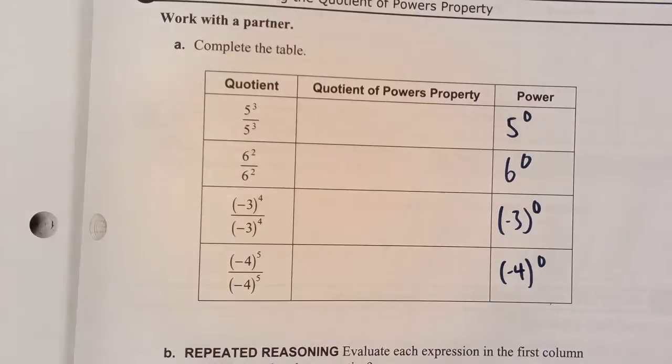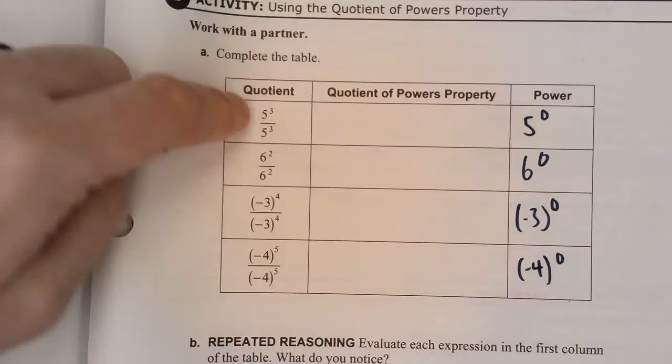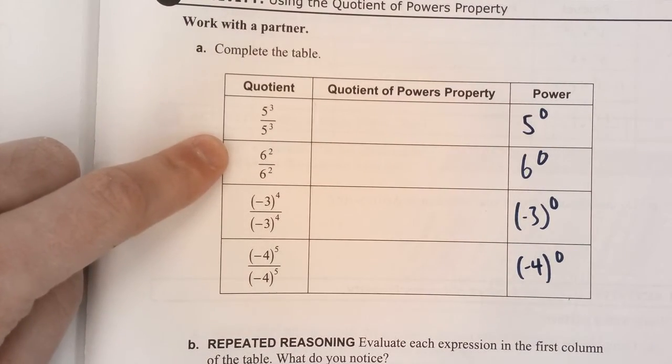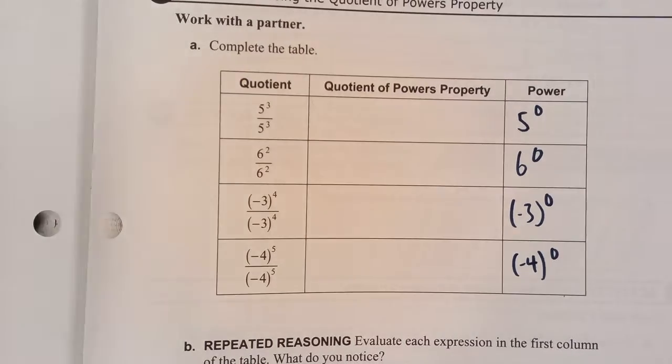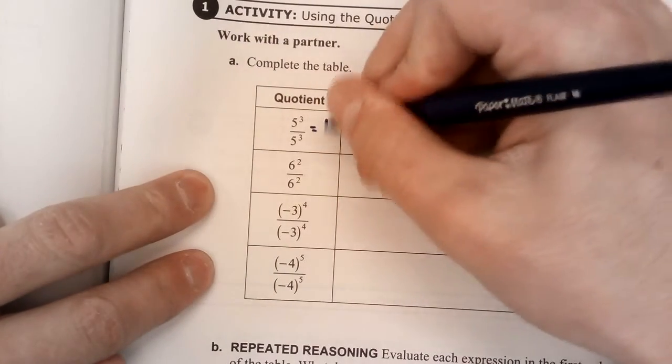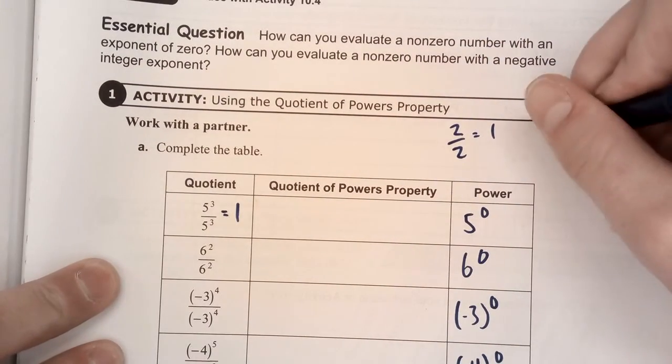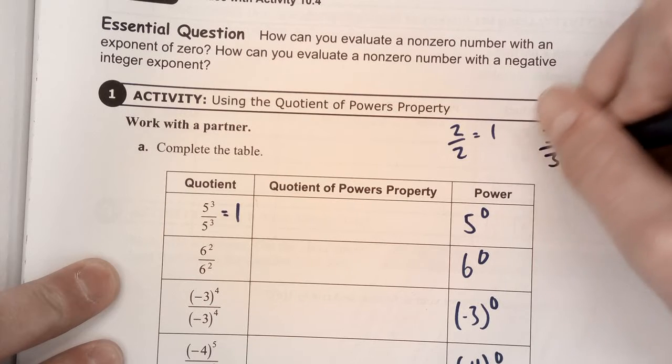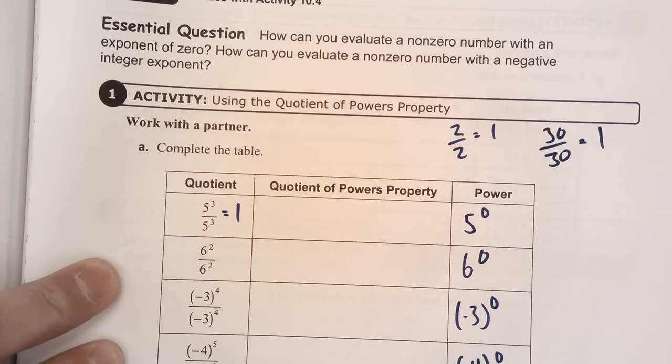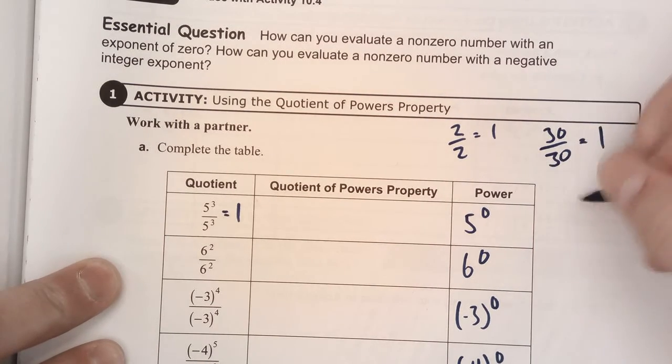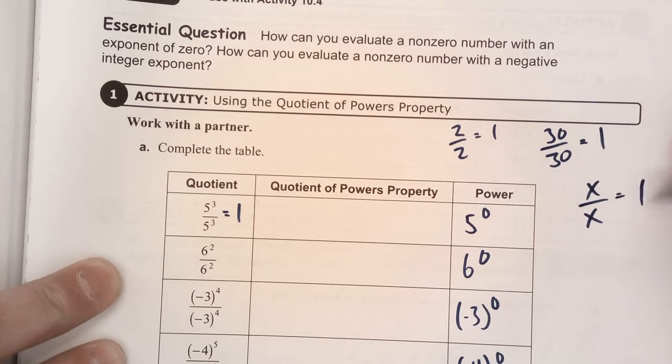All right, now we also know that the numerator and the denominator are the same thing in the fraction. That always reduces to 1. Like, I know that this is just 1, the same way I know that 2 over 2 is equal to 1, or 30 over 30 is equal to 1. So x over x is always equal to 1. The numerator and denominator are the same thing as 1.